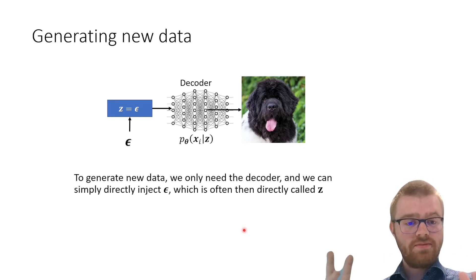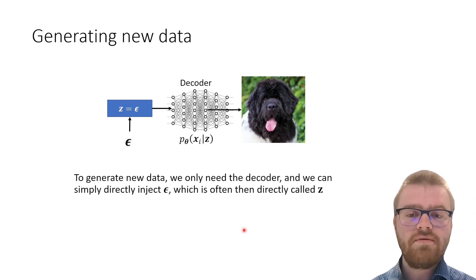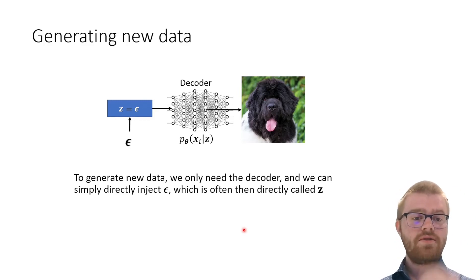If we have trained this completely, we can now generate new data easily. We can just ignore the encoder and only use the decoder, and we will directly use basically the noise ε and push it through the decoder to get new pictures.